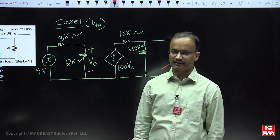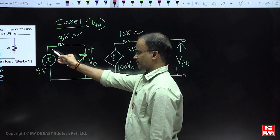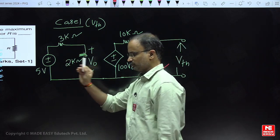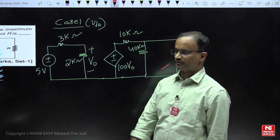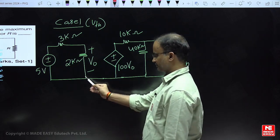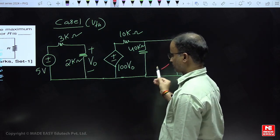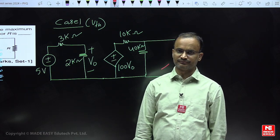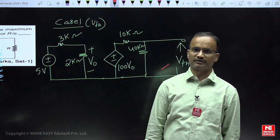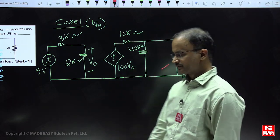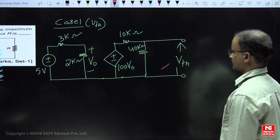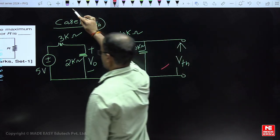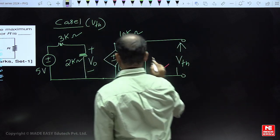As per KCL, the current which leaves a point must return to its original position. But in this example, if any current is flowing here, it cannot return to its original position because no return path exists. That is why loop 1 and loop 2 both operate independently.